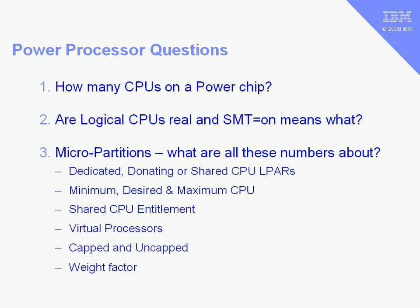In the previous two movies — and I recommend you watch those first — we've looked at how many CPUs are on a Power 4, Power 5 or Power 6 chip, and the answer is two. Two physical CPUs per chip. The second movie looked at logical CPUs: when we switch the SMT feature on, we end up with two logical CPUs running on one physical CPU. But the logical CPUs don't actually exist — it's just a way of getting two programs scheduled to operate on one physical CPU, running at the same time using the same processor.